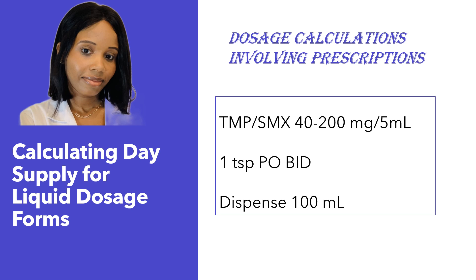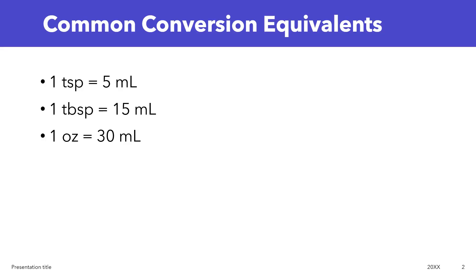Okay, let's get started. Before we go into how to calculate the day supply for liquid dosage forms, there are some common conversion equivalents that I think are important for you to know. Sometimes the unit for the liquid will be given in something other than ml — it could be teaspoon, tablespoon, or ounces. These are the most common ones, so it is important for you to know how to convert between those units and ml.